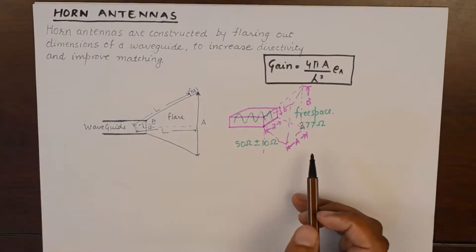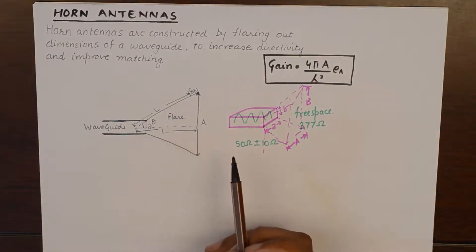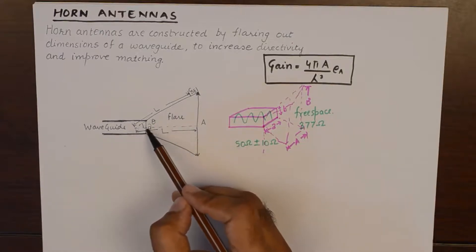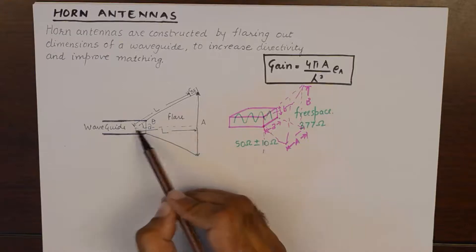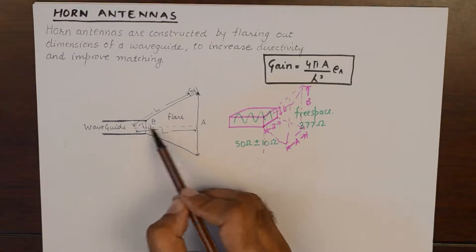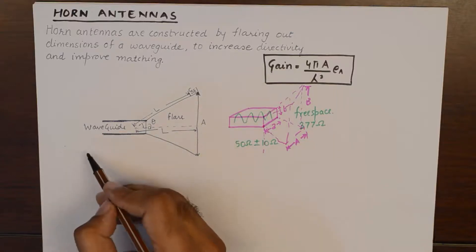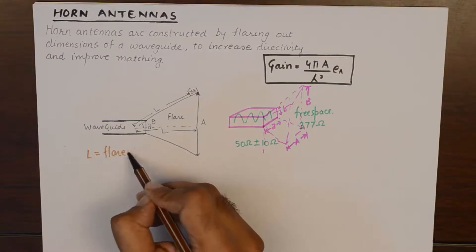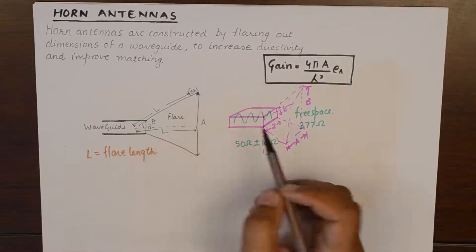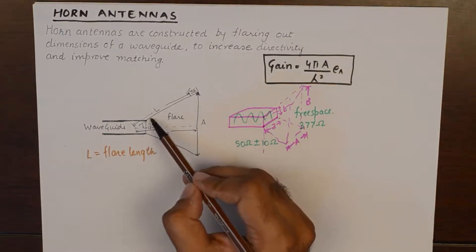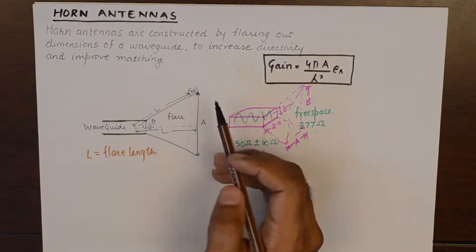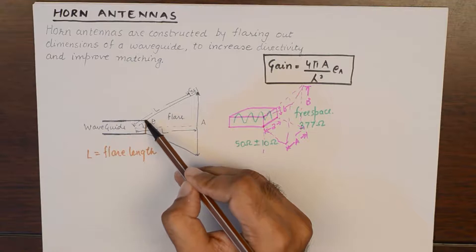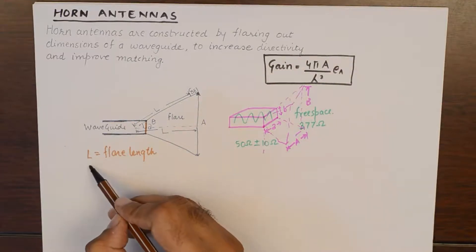Now, if we look at the side view of a waveguide, we see that the length by which this waveguide is increased is known as L which is known as flare length. And the angle at which flaring is done, the angle at which gradual increase of this dimension A happens is known as flare angle.